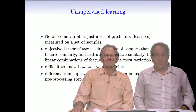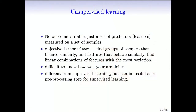More formally, in unsupervised learning there's no outcome variable — just a set of predictors — and the objective is more fuzzy. It's not to predict y, because there is no y. It's rather to learn about how the data is organized and to find which features are important for the organization of the data. We'll talk about clustering and principal components, which are important techniques for unsupervised learning.